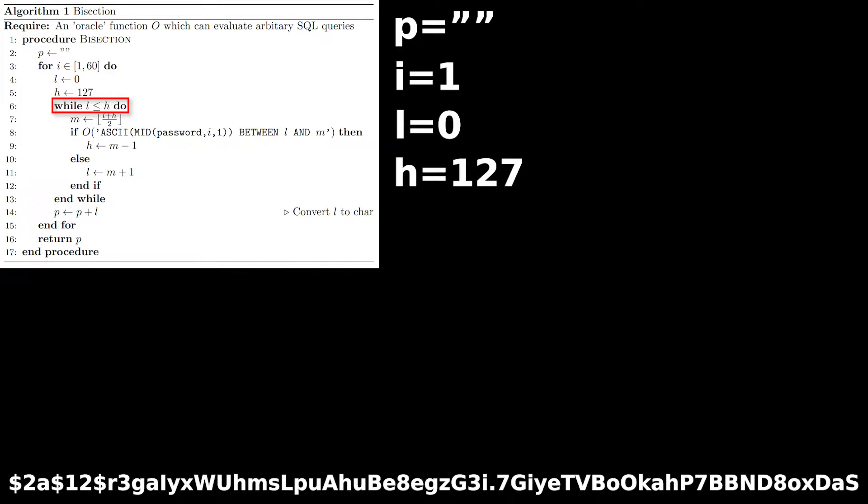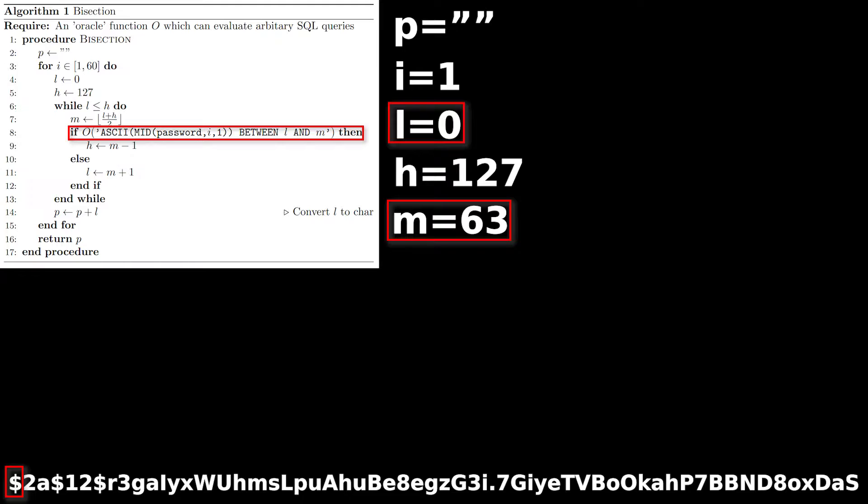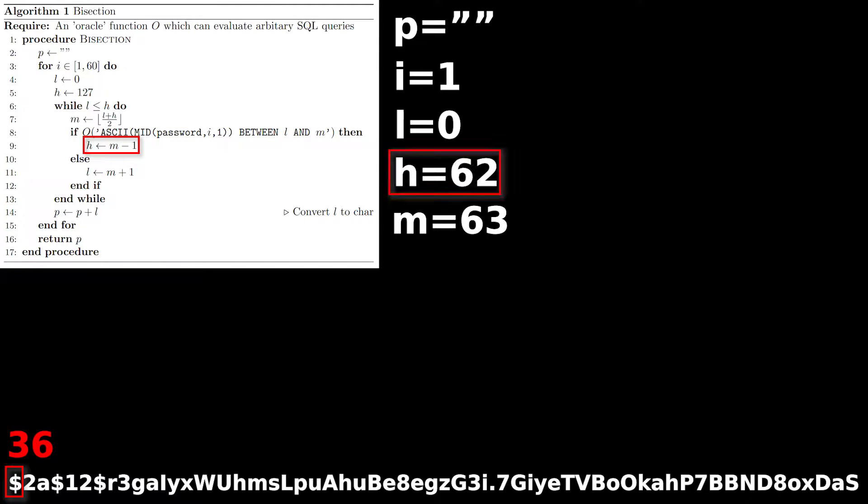Next, we step into the inner loop. We calculate the midpoint M of the search area as 63, and then use our SQL injection to ask the server if the ASCII value of the first character of password is between 0 and 63, inclusive. The server will say yes because the ASCII value of a dollar sign is 36, so we can set the upper bound H to 1 below the midpoint, or 62.